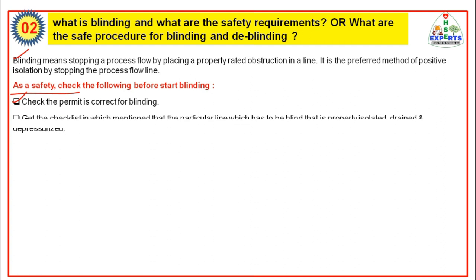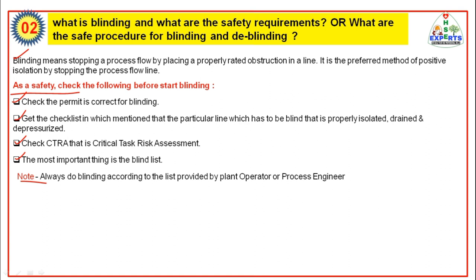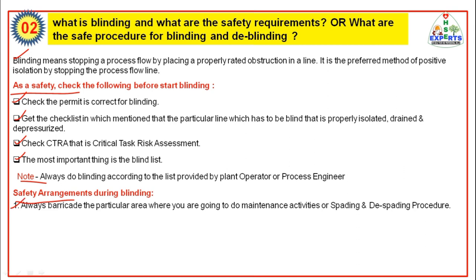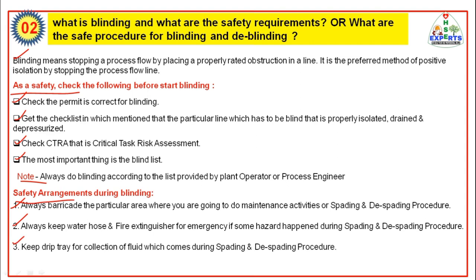Check the permit is correct for blinding. Get the checklist confirming that the particular line to be blinded is properly isolated, drained and de-pressurized. Check the CTRA — that is, the Critical Task Risk Assessment. Most importantly, always do blinding according to the list provided by the plant operator and process engineer. Safety arrangements during blinding: always barricade the particular area where you are going to do maintenance activities or spading and de-spading procedures. Always keep a water hose and fire extinguisher for emergency if some hazard occurs during the procedure. Keep a drip tray for collection of fluids which come out during spading and de-spading.